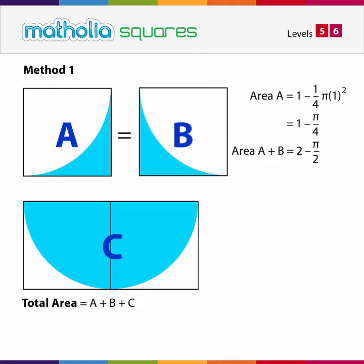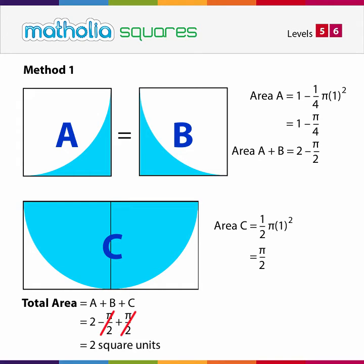Area C is a half circle of radius 1 unit, which gives an area of one half pi square units. Adding the three areas, we get 2 minus one half pi plus one half pi. The half pi's cancel to leave an area of 2 square units.